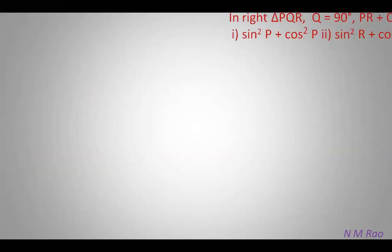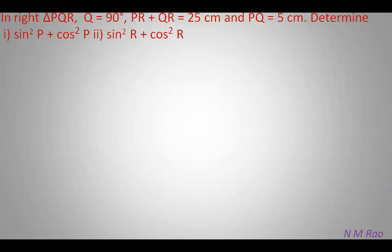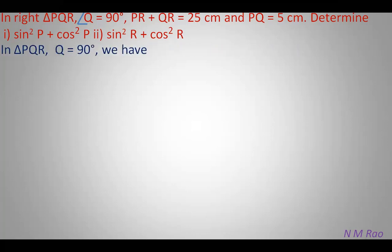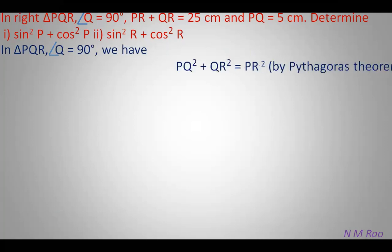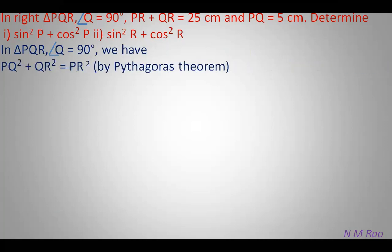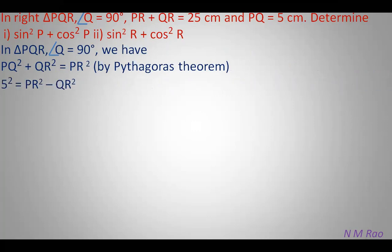Let us solve one more problem. A right angle triangle PQR is given with angle Q equal to 90 degrees. Side PQ is given as 5, and the sum of the other two sides PR and QR is 25. We have to determine the value of sin²P plus cos²P and sin²R plus cos²R. We can apply the Pythagoras formula: PR² equals PQ² plus QR², so PR² minus QR² equals PQ² equals 25.